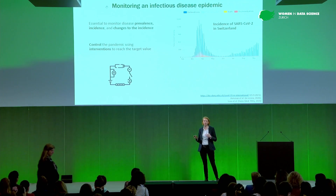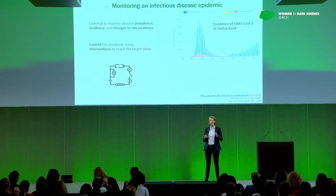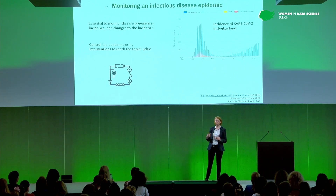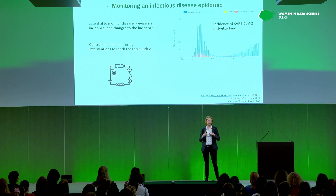This target value is in the hands of policymakers. In New Zealand, for instance, they had a zero COVID strategy where the goal is zero transmissions. In Switzerland, the goal was different — we didn't want to overburden the health system. We can achieve this control through interventions. My role in all of this was not to determine those interventions, but rather to supply the information necessary to do so — information on the status of the pandemic and specifically these changes to the incidence.